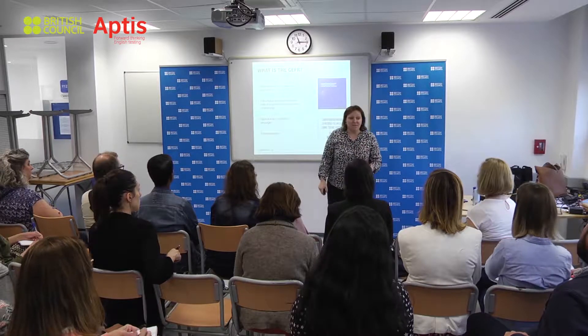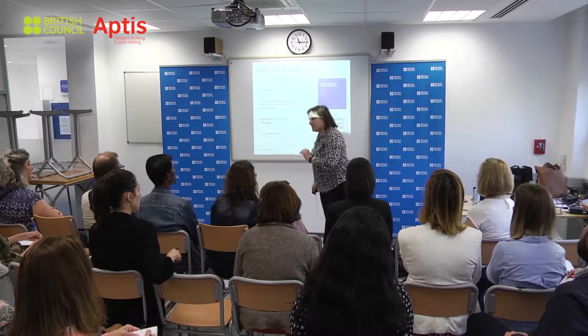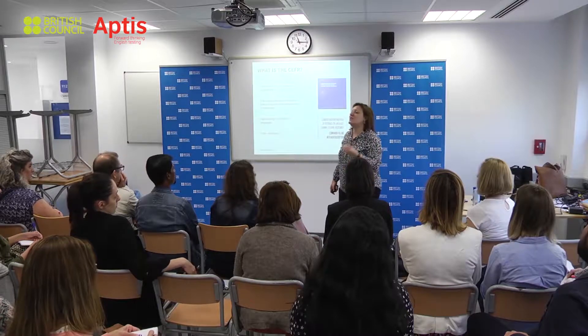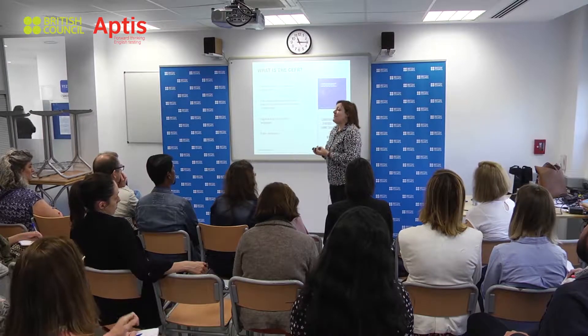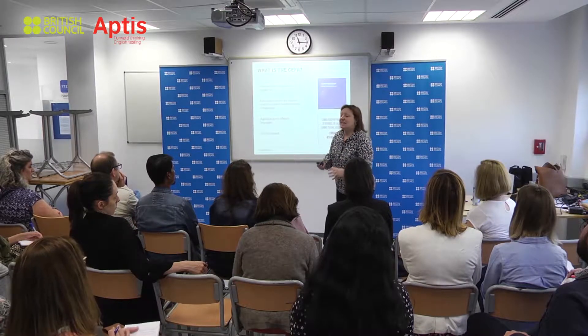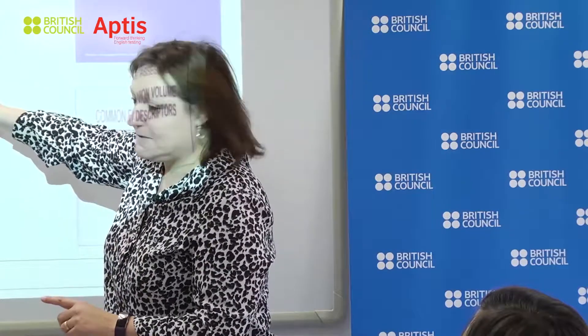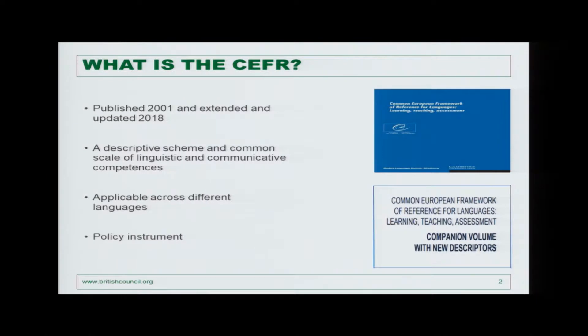Importantly, the CEFR is a descriptive scheme — it describes language ability at certain levels with can-do statements: examples of things you can do in the real world at that level. It's a reference and description of language ability; it doesn't prescribe what you have to do. It's also language and context non-specific, meaning it doesn't focus on one language in particular and can be applied, with some local contextual changes, to any language. It has been translated into over 40 languages worldwide, and in terms of policy, the CEFR clearly has a massive impact globally.